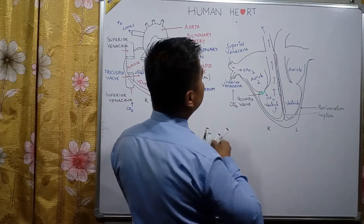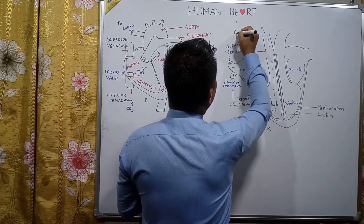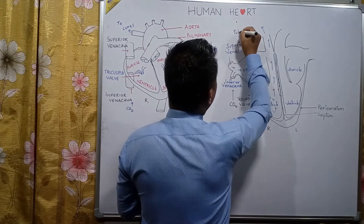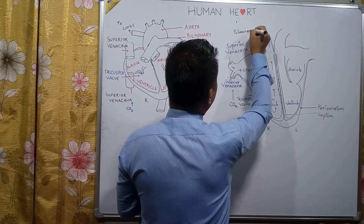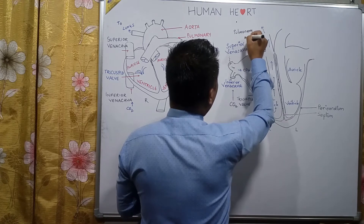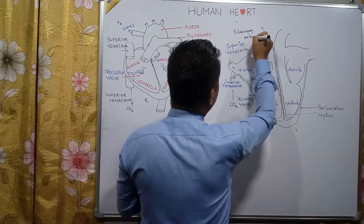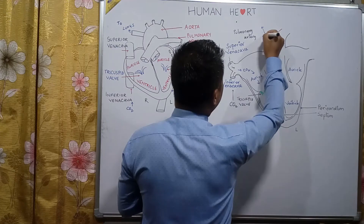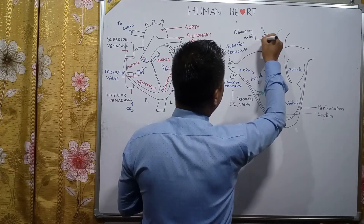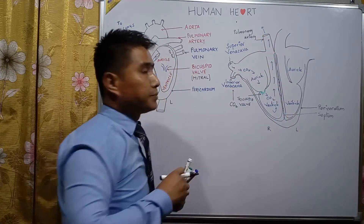The blood goes out of the heart through a blood vessel, and the name of this blood vessel is the pulmonary artery.